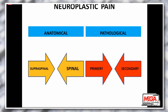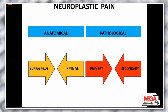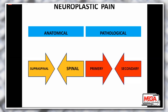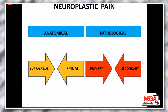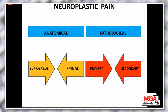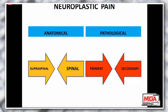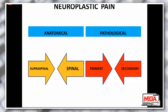Neuroplastic pain may be classified anatomically or pathologically. Anatomically, it can be classified according to origin into supraspinal and spinal cord. Pathologically, it can be classified into a primary cause in the central nervous system leading to pain sensation, or a secondary cause in the peripheral or central nervous system or peripheral tissues leading to secondary changes in the CNS and pain sensation.